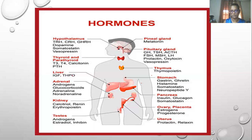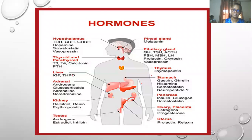Some of the bodily functions controlled by this system include metabolizing, growth and development, sexual function and reproduction, heart rate, blood pressure, appetite, sleeping and waking cycles — which works with the circadian rhythm — and body temperature. Each gland produces one or more hormones which go to specific target organs and tissues in the body.